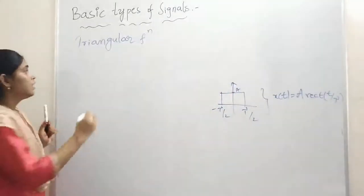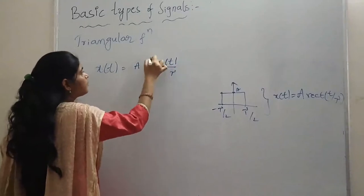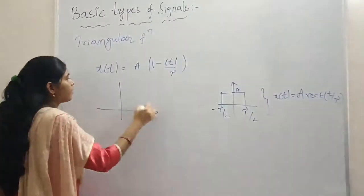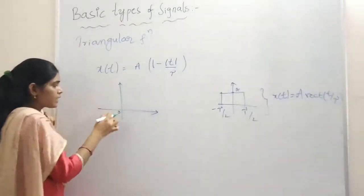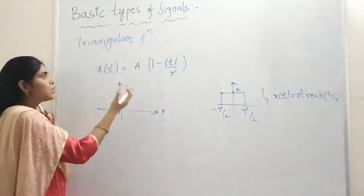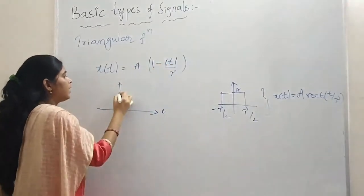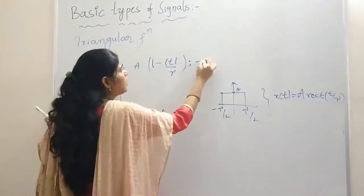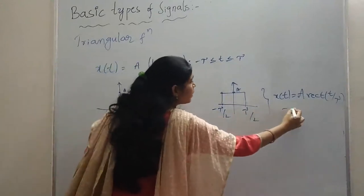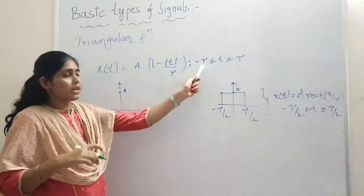Next is the triangle pulse function. It is mathematically represented as A into (1 minus mod T by tau). For the graphical representation, at T equal to 0, substituting gives amplitude A. Note the difference in limits: the rectangular signal spans minus tau by 2 to tau by 2, whereas the triangle function spans minus tau to tau.